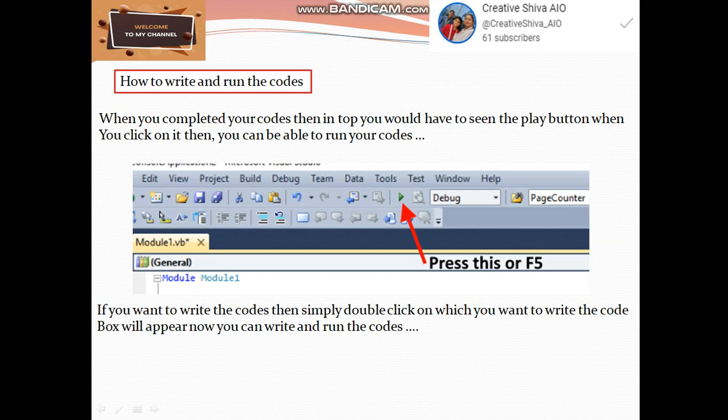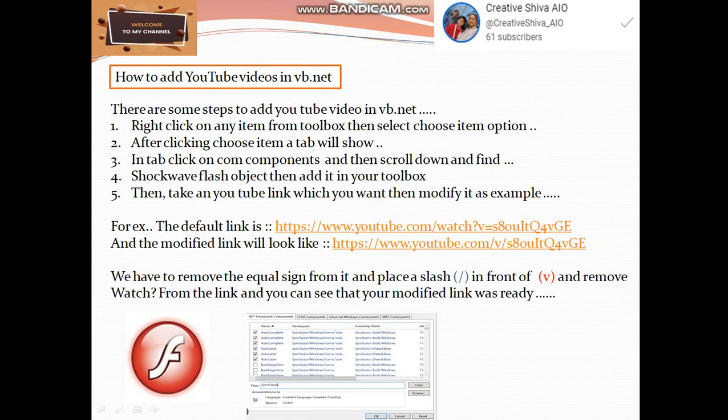How to add youtube videos in vb.net. There are some steps to add youtube videos in vb.net: Right click on any item from toolbox then select choose item option. After clicking choose item a tab will show. In tab click on com components and then scroll down and find shock wave flash object. Then add it in your toolbox then take any youtube link which you want then modify it as example.